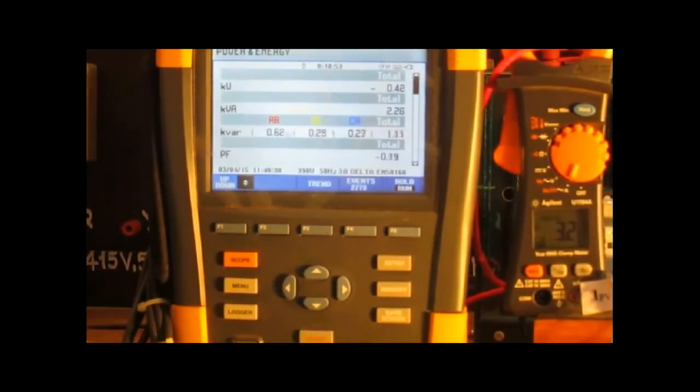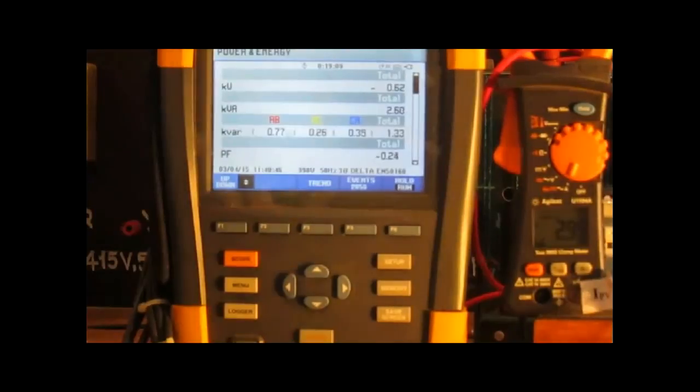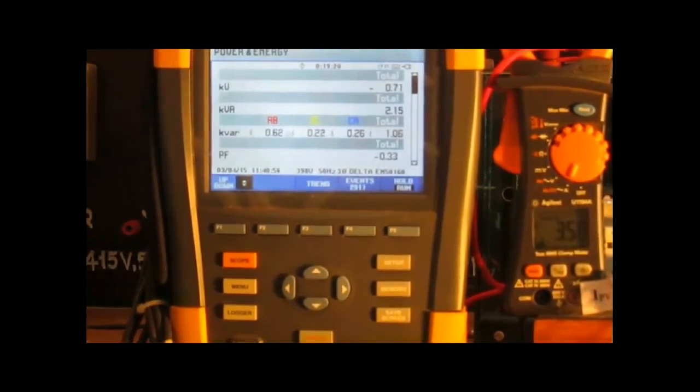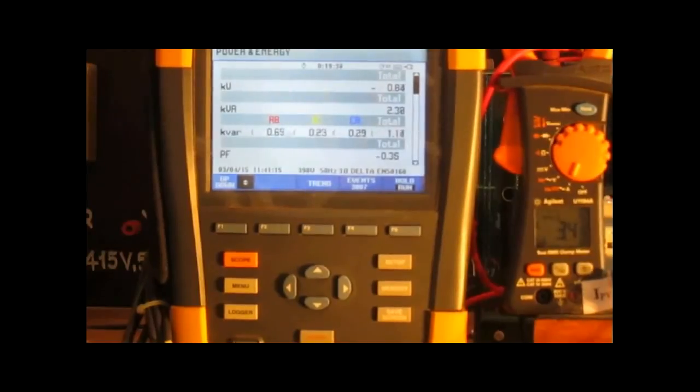Now we are watching the power delivered by the induction generator. On the right side you are watching the PV current, that is current delivered by the PV. You can watch that as the power delivered by the IG increases 0.5, 0.6, 0.60 and so on. You can also watch the current delivered by PV slowly decreases.